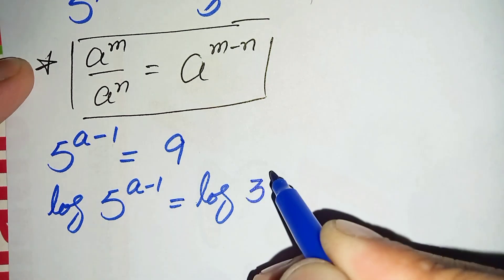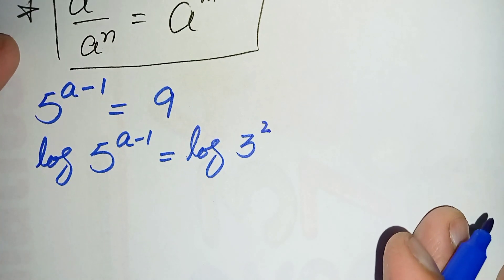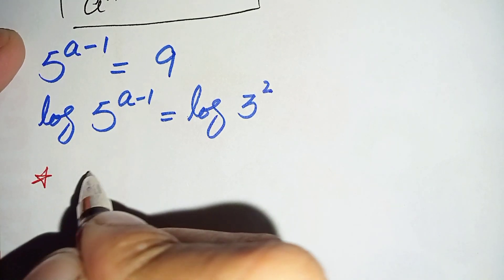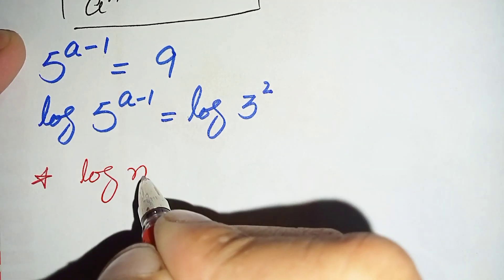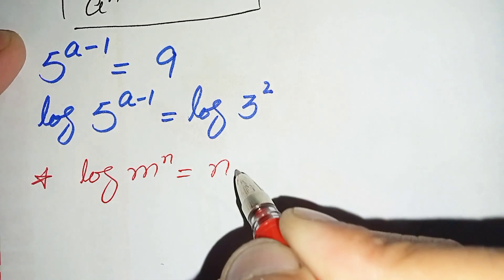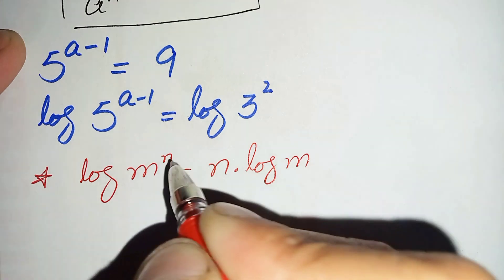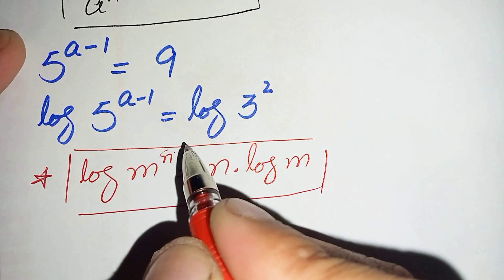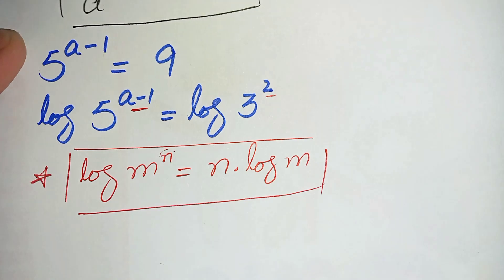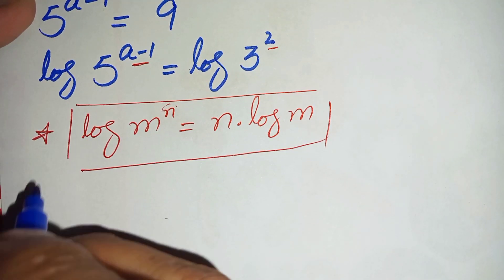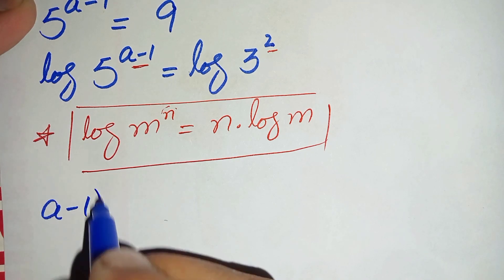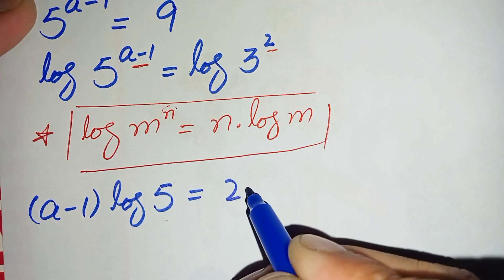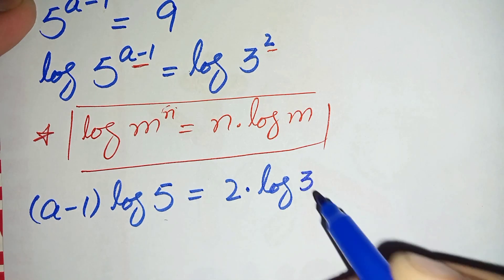We can write 9 as 3 squared. Here we will use the log property: log of m raised to power n can also be written as n times log of m — meaning we move the power to the front of the log. Applying this to both sides, the equation becomes a minus 1 times log 5 is equal to 2 times log 3.